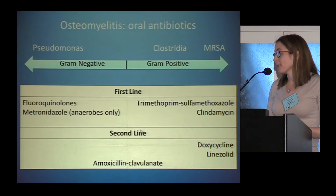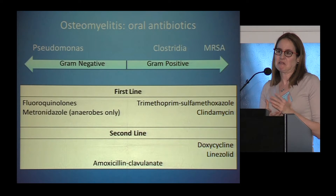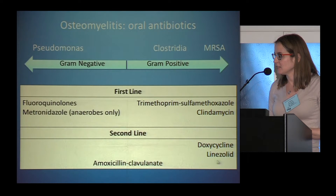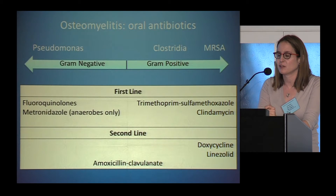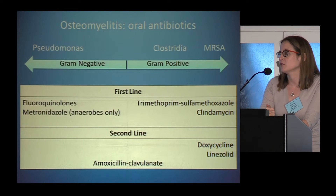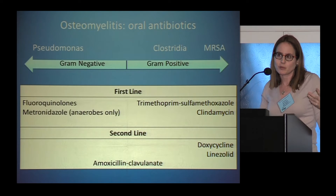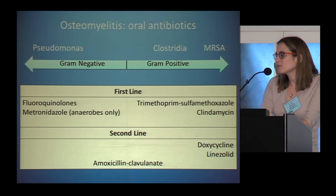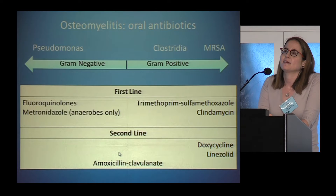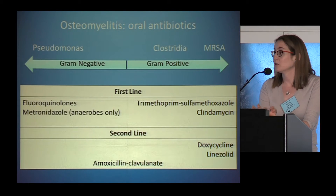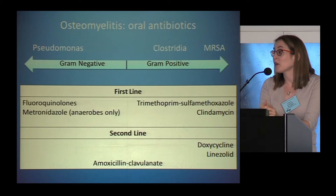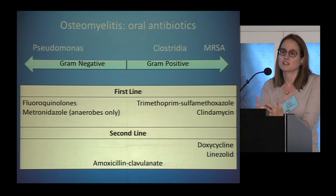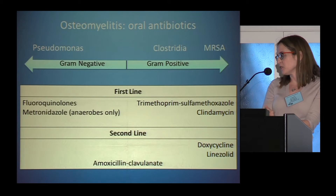Second-line agents: doxycycline — we use it a fair bit, but the truth is we don't really know how good it is. Linezolid is great — oral, well-absorbed, works very well — but you can only really use it for about two weeks because you'll run into bone marrow suppression, so it's not ideal for prolonged courses. Amoxicillin-clavulanate (Augmentin) is popular because it has good gram-positive, gram-negative, and anaerobic coverage, but there's not great bone penetration. For someone with a significant osteo, I would be hesitant to use it as a primary agent unless simplicity is needed.